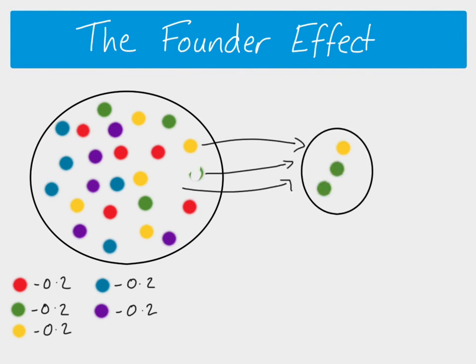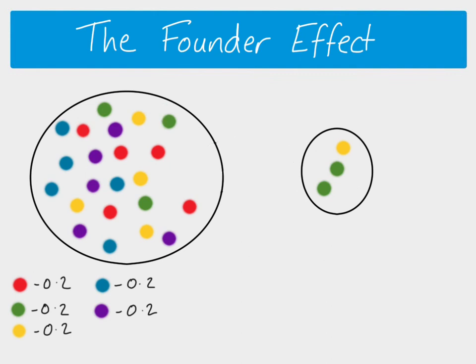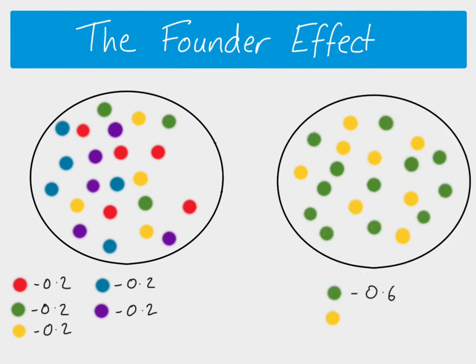These individuals are now the founders of a new population. Because founding populations are usually very small, they won't have the same genetic diversity as the original population. In this example, we've only got yellow and green alleles — none of the red, purple, or blue — so there's decreased genetic diversity in the founding population. If we wait several generations, that population is going to be very different from the original.